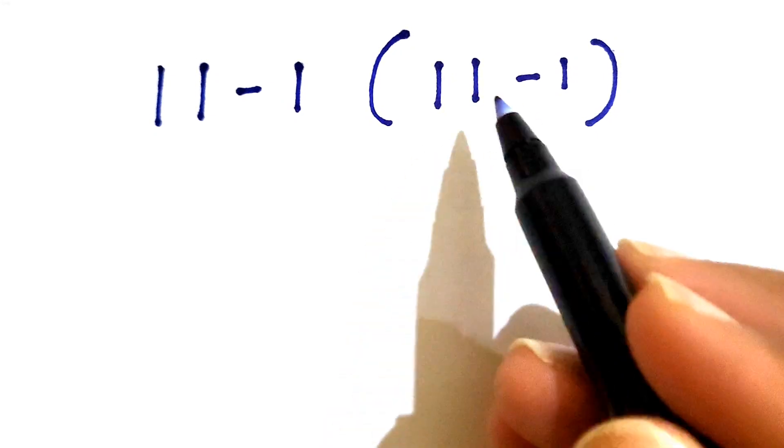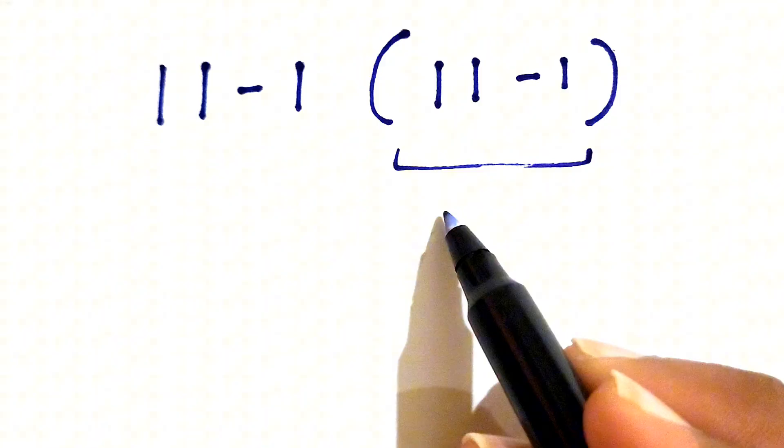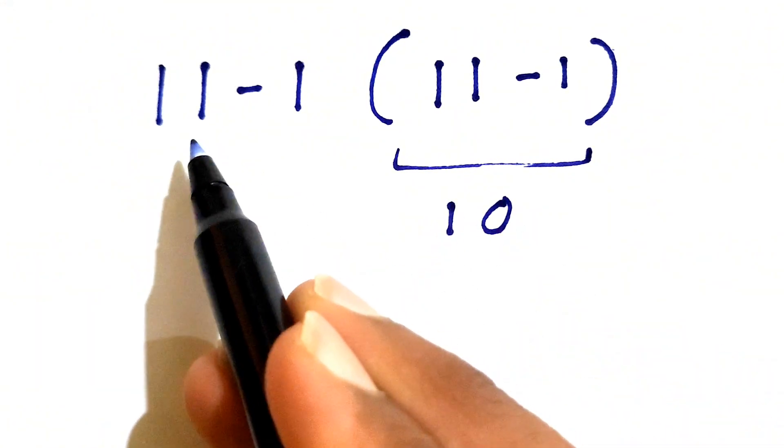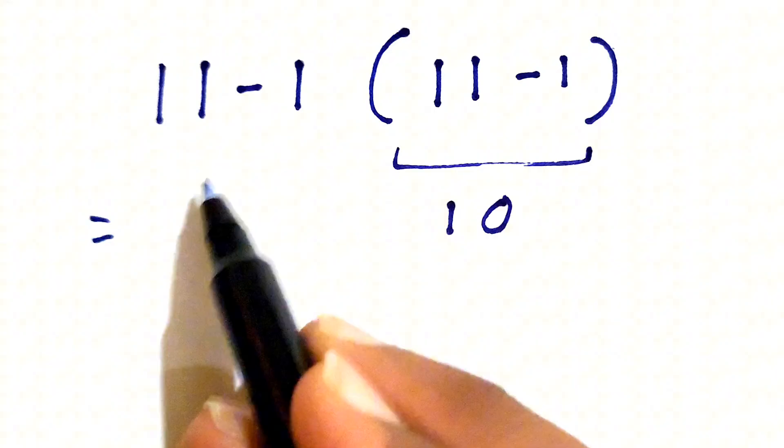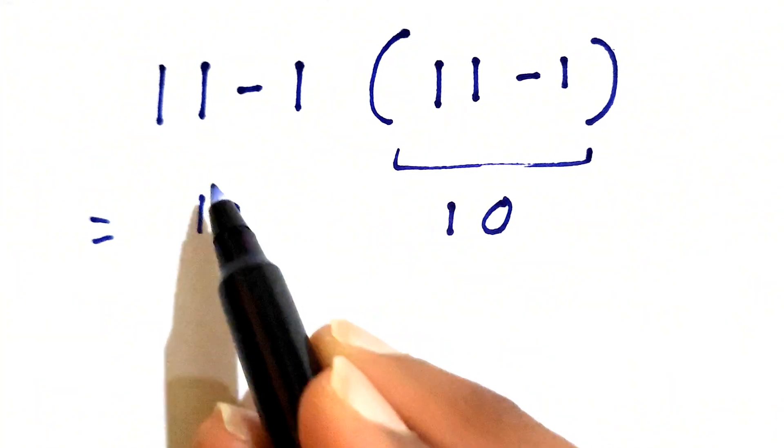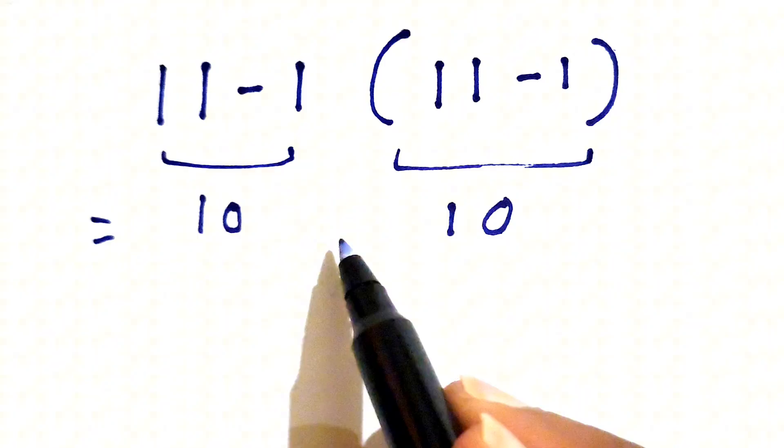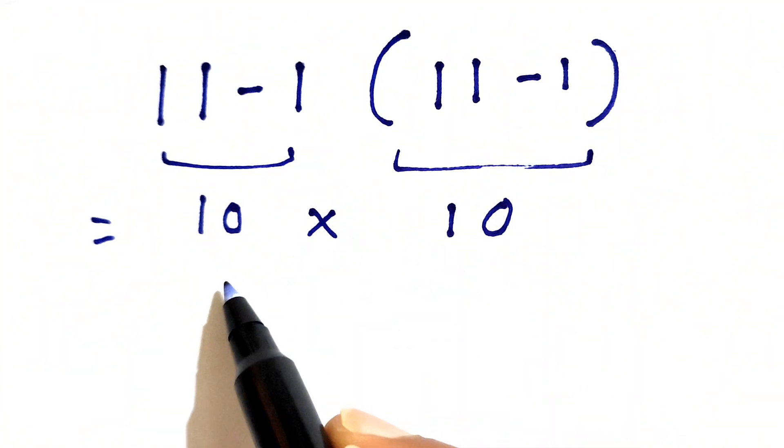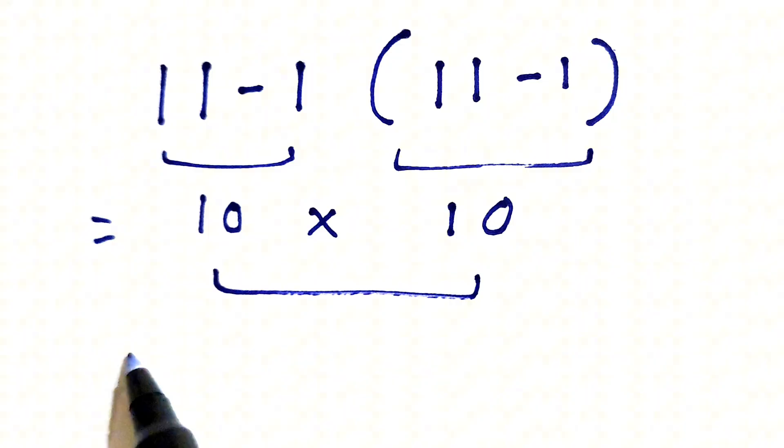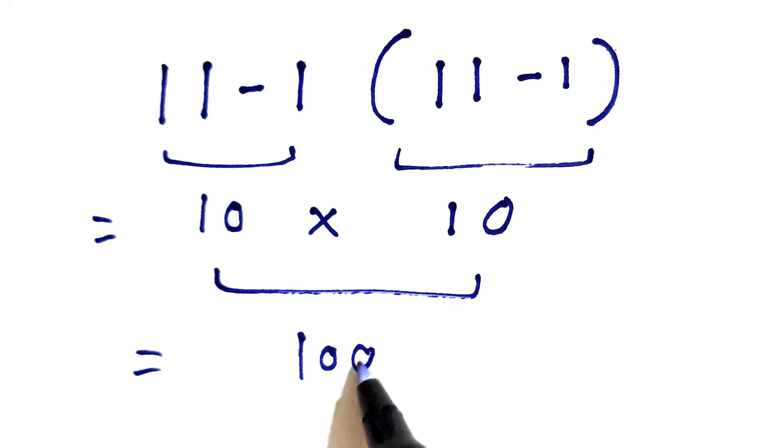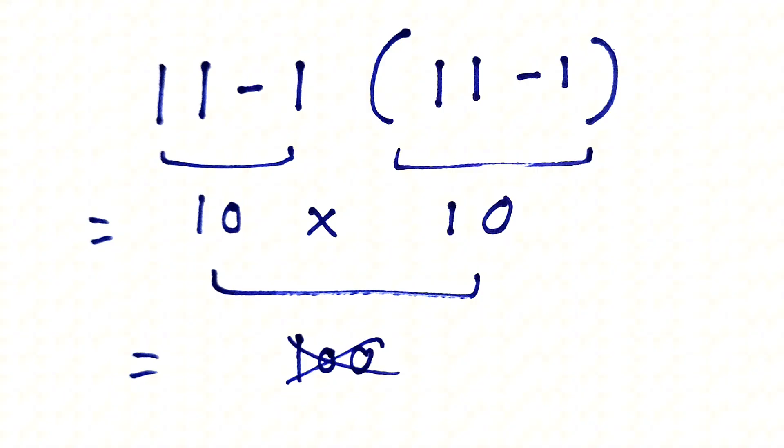11 minus 1 gives us 10, and again this 11 minus 1 also gives us 10. Now we have 10 times 10 that gives us the answer as 100, but this answer is not correct because we have not followed the proper order of operations.